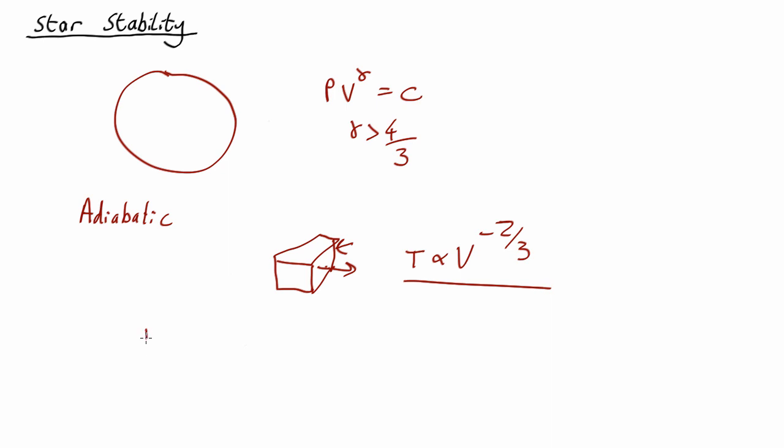So we know for an ideal gas, PV is proportional to temperature, and temperature is proportional to volume to the minus two thirds. So we've got PV proportional to V to the minus two thirds. Take that over to the other side of the equation, we get PV to the five thirds, which is a constant.